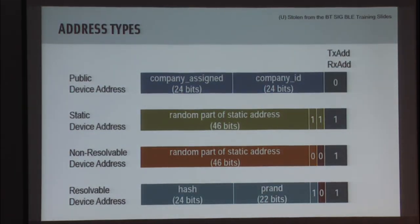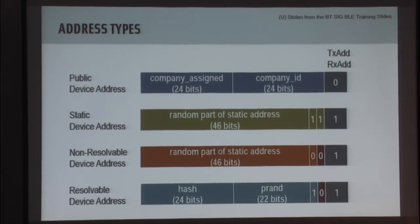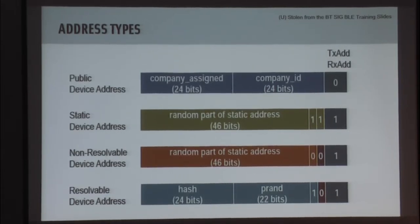Let's talk about address types. The public device address is familiar to anyone who knows Ethernet: 24 bits are a random number assigned by the manufacturer, and 24 bits are an OUI - an organizationally unique identifier administered by the IEEE. So with a public address you can get a good idea of who manufactured that device. For random static addresses and non-resolvable device addresses, these indicate what the device is, and once you've initially paired with it you'll be able to find the device again quickly. These addresses don't rotate - they remain the same day in, day out.